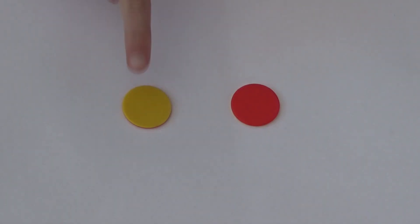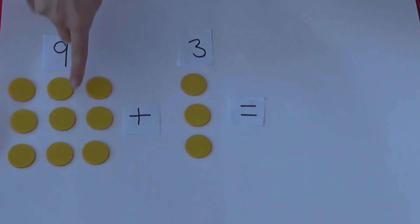Next, we're going to use two-sided counters to understand exchanging. I'm going to use yellow counters to represent ones and red counters to represent tens. Here we can see nine and three equals twelve ones.